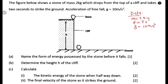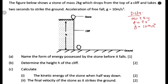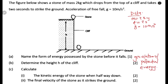The first question is: name the form of energy possessed by the stone before it falls. So where it is seated there before it falls — that is called gravitational potential energy. To answer question A, we say gravitational potential energy.